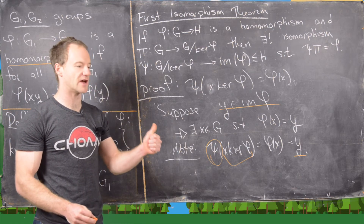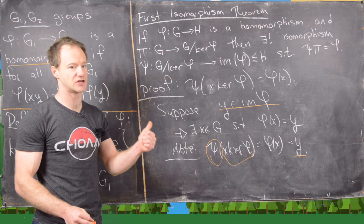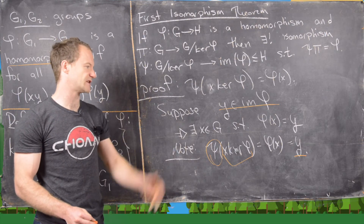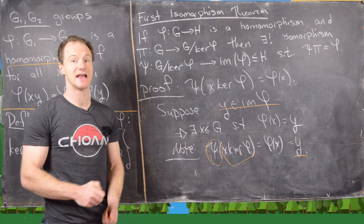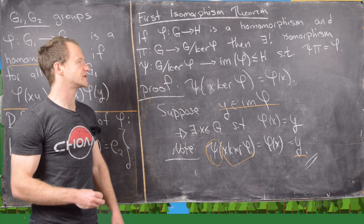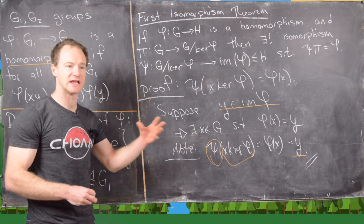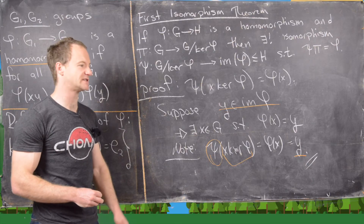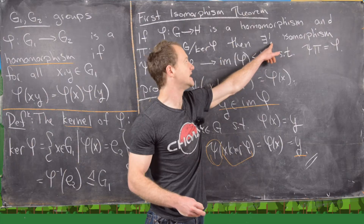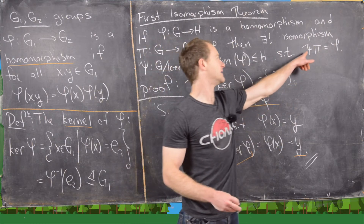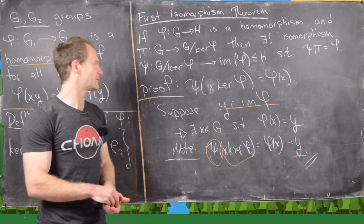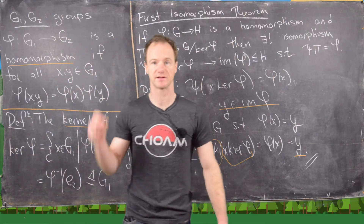So psi is well-defined, a homomorphism, injective, and surjective. Therefore it is an isomorphism. There are a couple more things to check: that it is a unique isomorphism and that it satisfies the rule psi∘pi = phi.